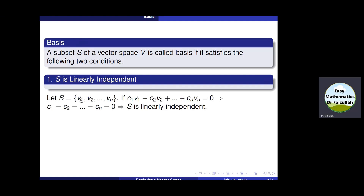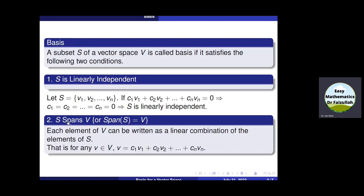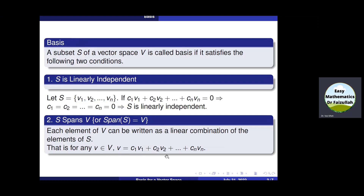Let S be a set of elements V1, V2, up to Vn. If we set the linear combination of these elements equal to the zero vector and simplify, and we find that all values of these constants are zero, it means this set is linearly independent. The second property is that the span of S must equal V, or we can say that S spans V. This means any element from the vector space can be written as a linear combination of the elements of S. Now let us explain it by an example.